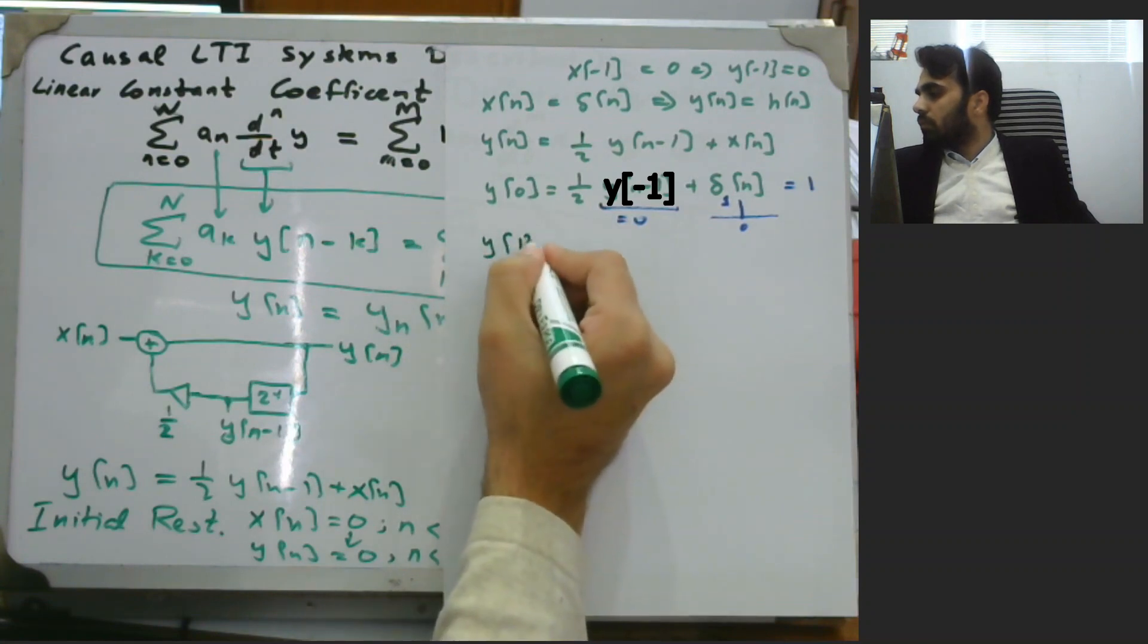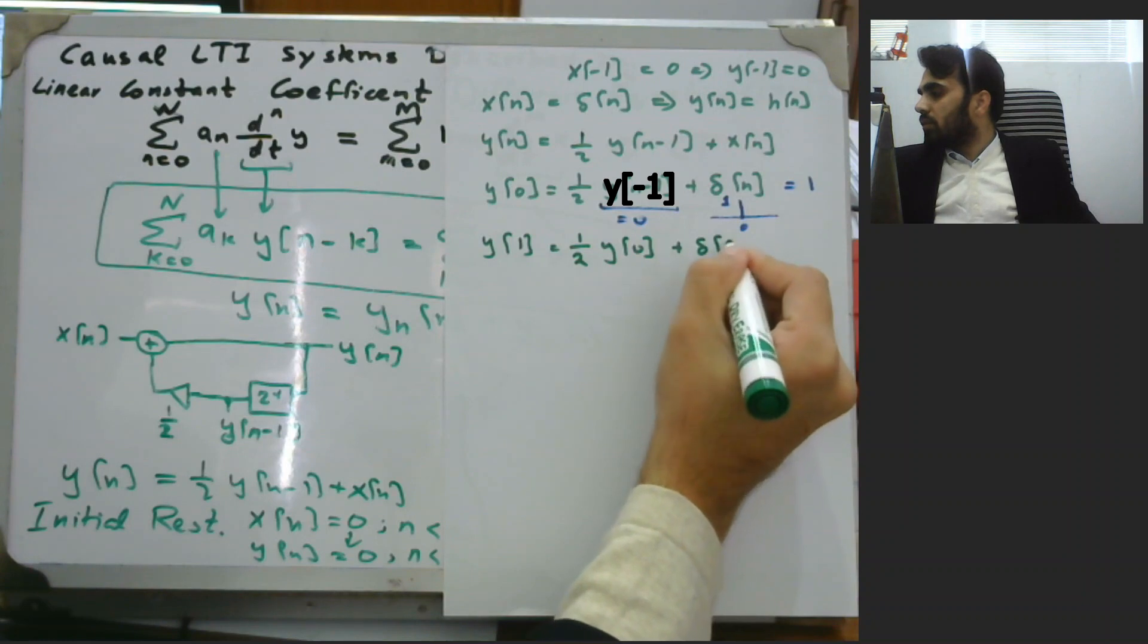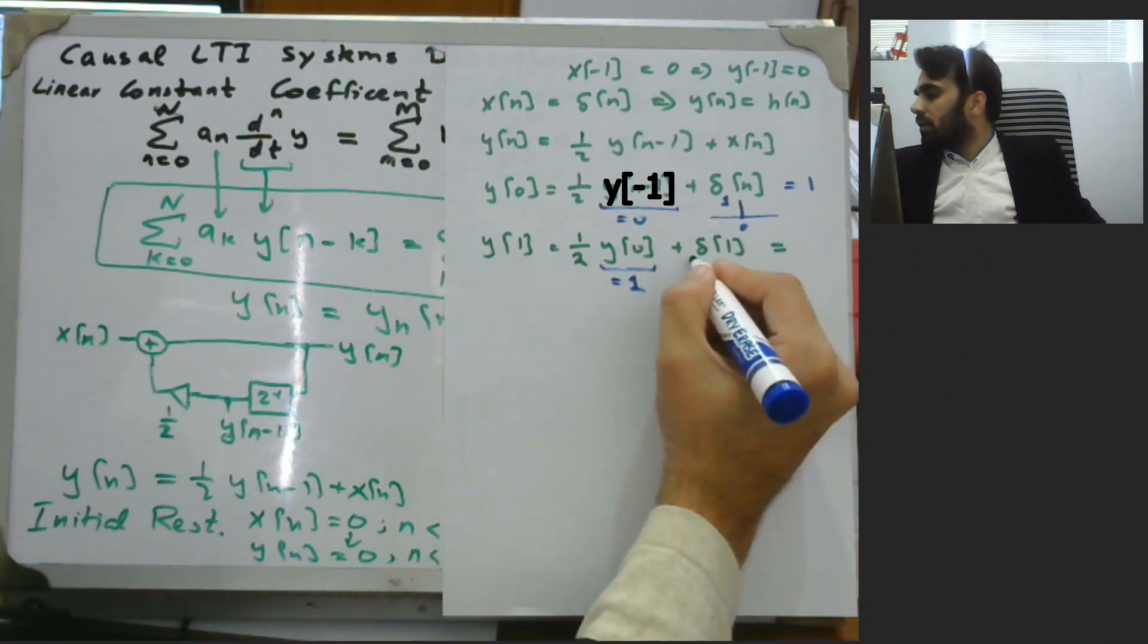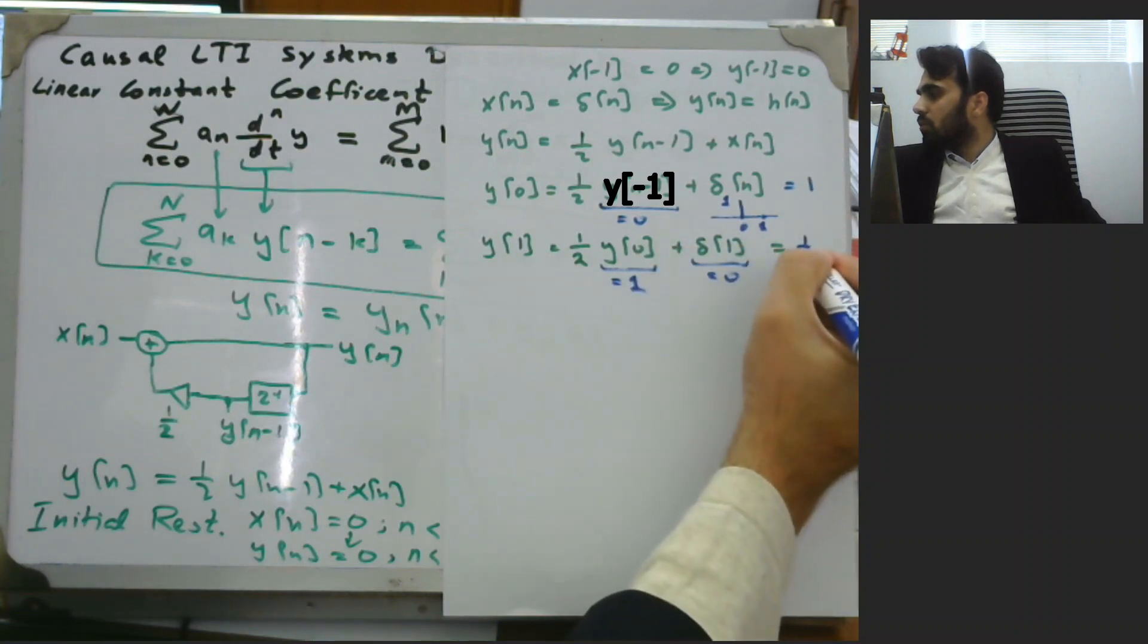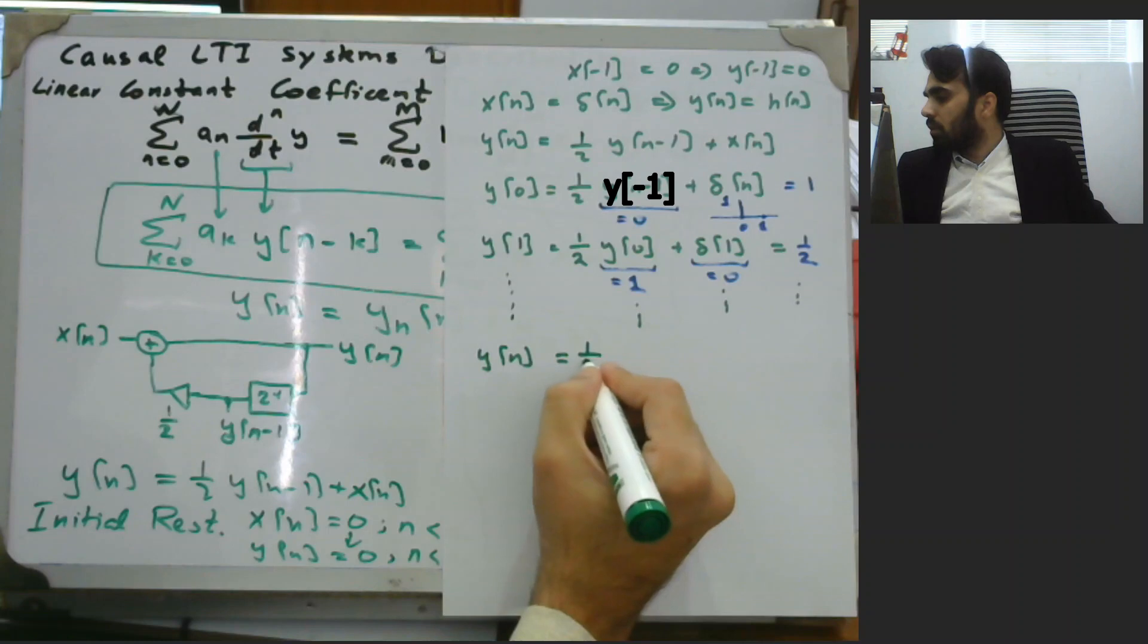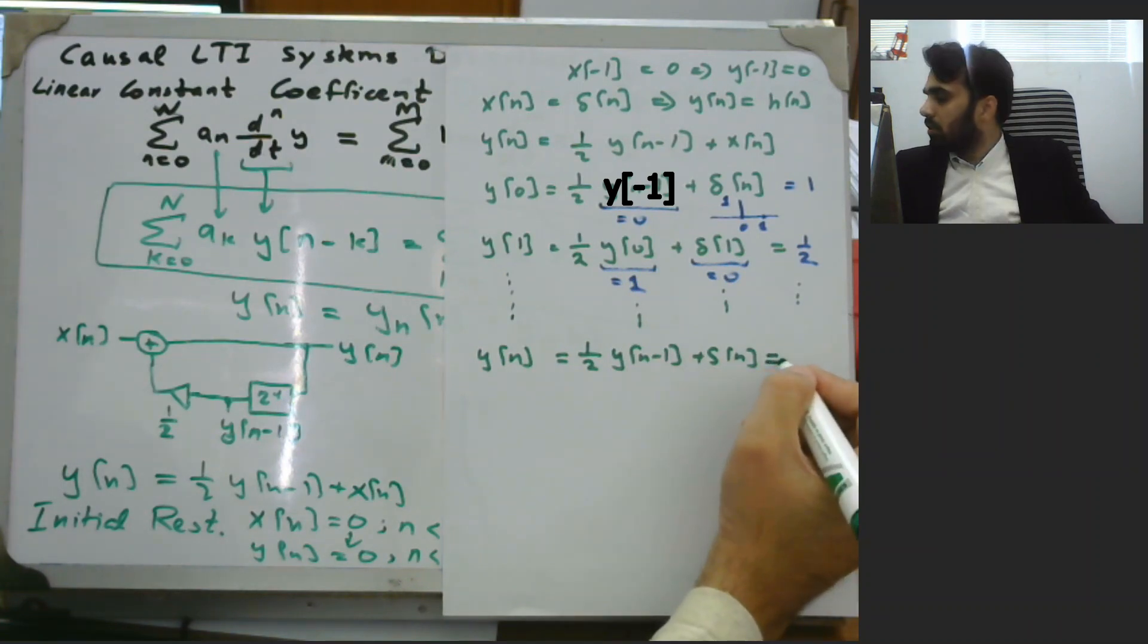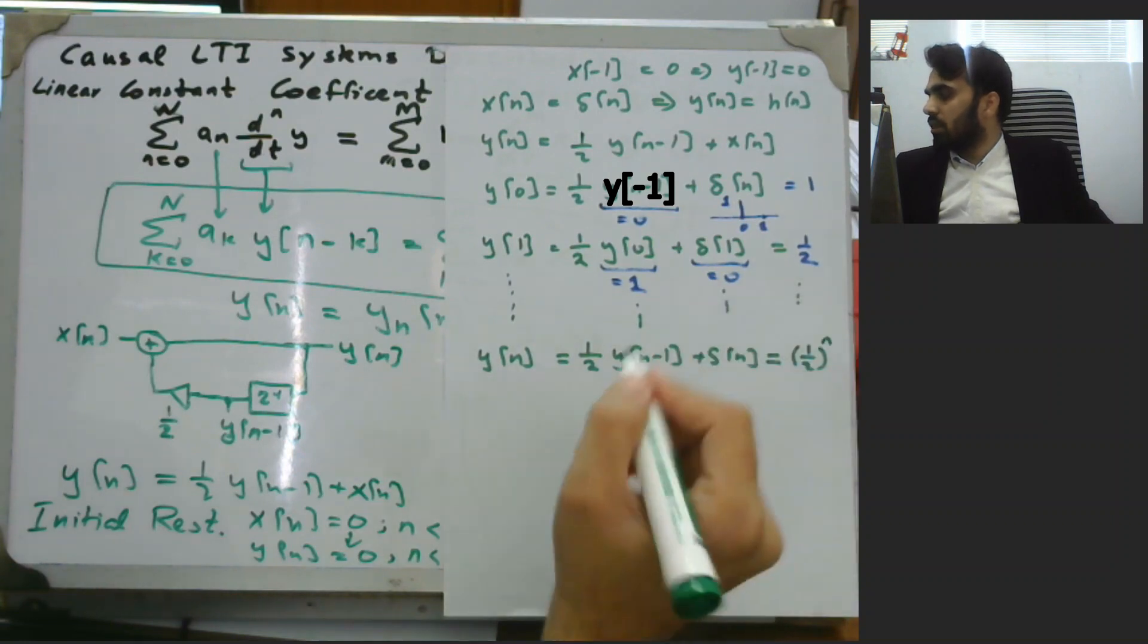Next when y of 1 is evaluated, you would have 1/2 times y of 0 plus delta of 1. Y of 0 is equal to 1, and delta of 1 equals 0. At time instant 1, the value of delta of n is 0, so you would have 1/2. So if we move on, y of n would be equal to 1/2 times y of n minus 1 plus delta of n. This would be equal to 1/2 to the nth value. Over here we had 1, so the power was 1. This would be the nth value.